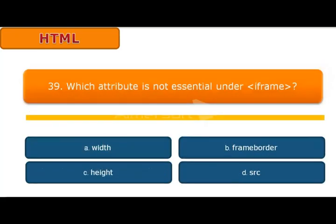Question 39: Which attribute is not essential under iframe? A width, B frame border, C height, and D source. Frame border is the right answer. This attribute is not essential under iframe tag.